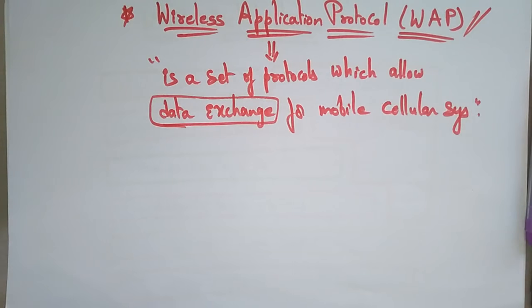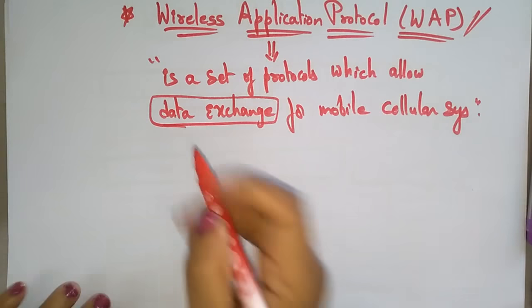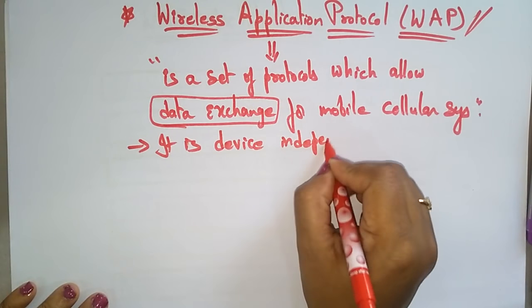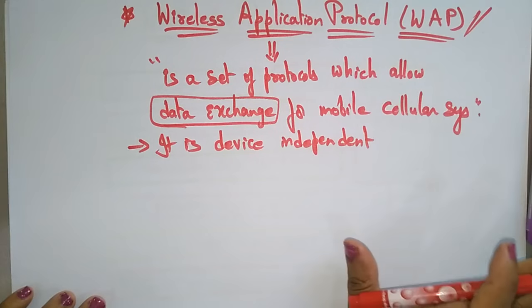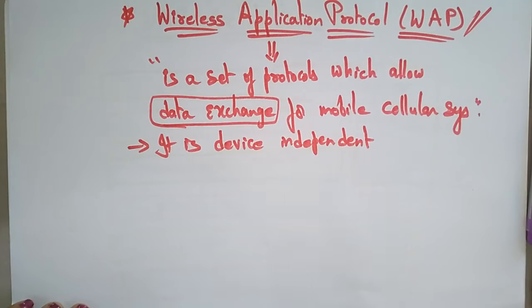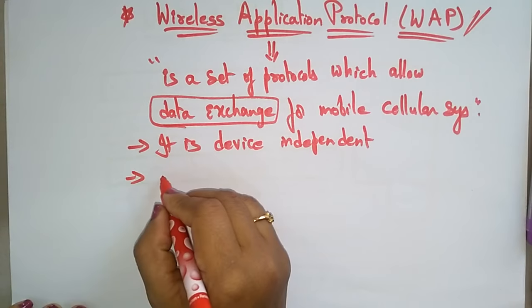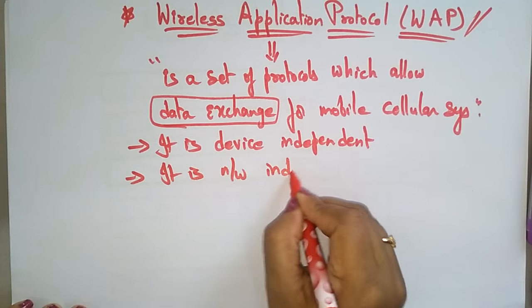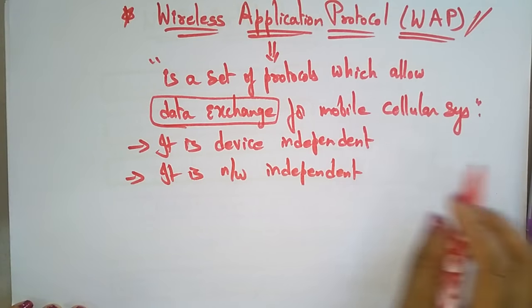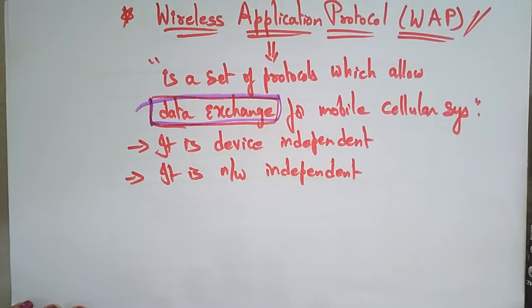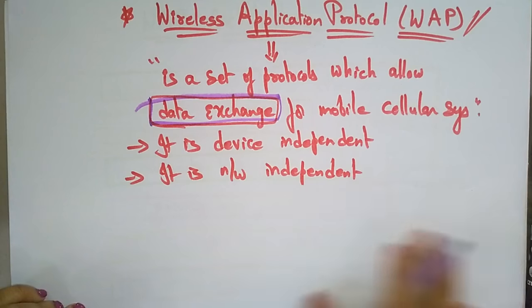WAP is device independent — whatever device you are using, it doesn't matter. Whether you are using a mobile phone, a laptop, a tablet, or any device, it is completely device independent. It is also network independent — whatever type of network you are using, it doesn't matter. The main aim of WAP is data exchange for mobile computing.